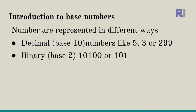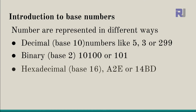Then we have base 2, or binary. Binary means two — two ways or two positions. We have either zero or one. Any number we want to represent uses only zero and one. For example, 10100 is one value, and 101 is another. All calculations in computers and storage are done in binary because of its simplicity.